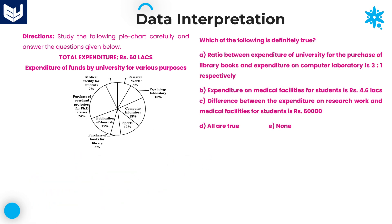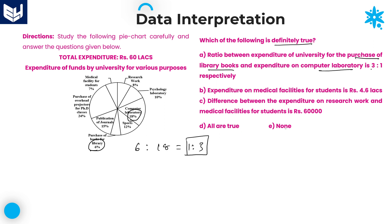Next question: which of the following is definitely true? Among the given options A, B, C, followed by 'all are true' and 'none of these', we check each. Option A states the ratio between expenditure on library books (6%) and computer laboratory (18%) is 3 is to 1. The actual ratio is 6:18 = 1:3. So option A is wrong.